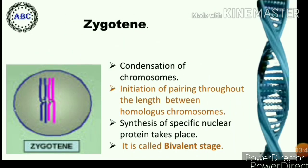Zygotene is the second stage. It begins with initiation of pairing between homologous chromosomes and ends when pairing is completed. In this stage, synthesis of a specific nuclear protein called zygotene protein takes place. Zygotene DNA occurs and chromosomes show condensation. The homologous partners in each pair of chromosomes exhibit pairing throughout the length — that is, they synapse and exhibit synapsis. Due to synapsis, each pair of homologous chromosomes forms a structure called a bivalent.